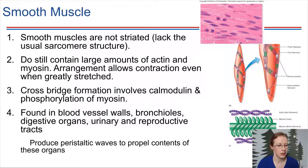So where is this found? Again, this is in the digestive organs, it's in the reproductive tract. It's also in the bronchioles, it's in blood vessel walls. It really is throughout the body. And in all cases, what it does is produces these sort of peristaltic waves, just to sort of propel the contents along. Whatever the contents is, it depends on which organ we're talking about. But this is a type of muscle that helps to move things along through the body.